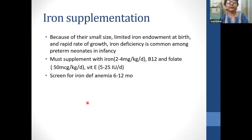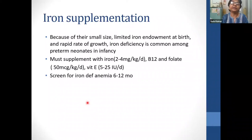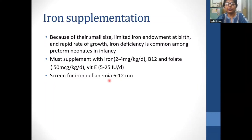Due to small size and limited iron endowment at birth plus rapid growth, iron deficiency is very common in preterm neonates. We must supplement all such babies with 2–4 mg/kg/day of iron by two weeks of age. B12, folate, and vitamin E also need to be supplemented to prevent anemia of prematurity. It is absolutely essential to screen these babies for iron deficiency anemia between 6 and 12 months of age for babies who are very low birth weight and less than 32 weeks of gestation.